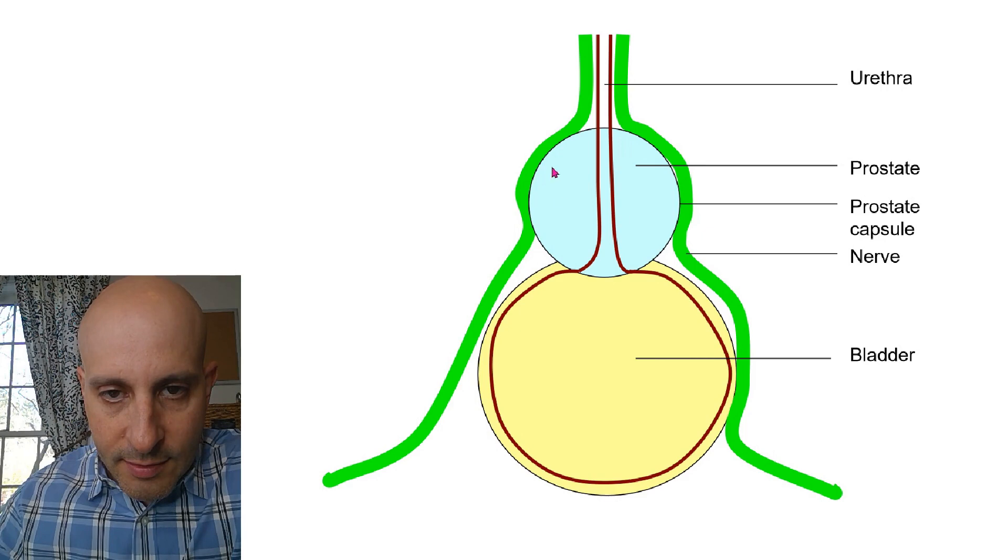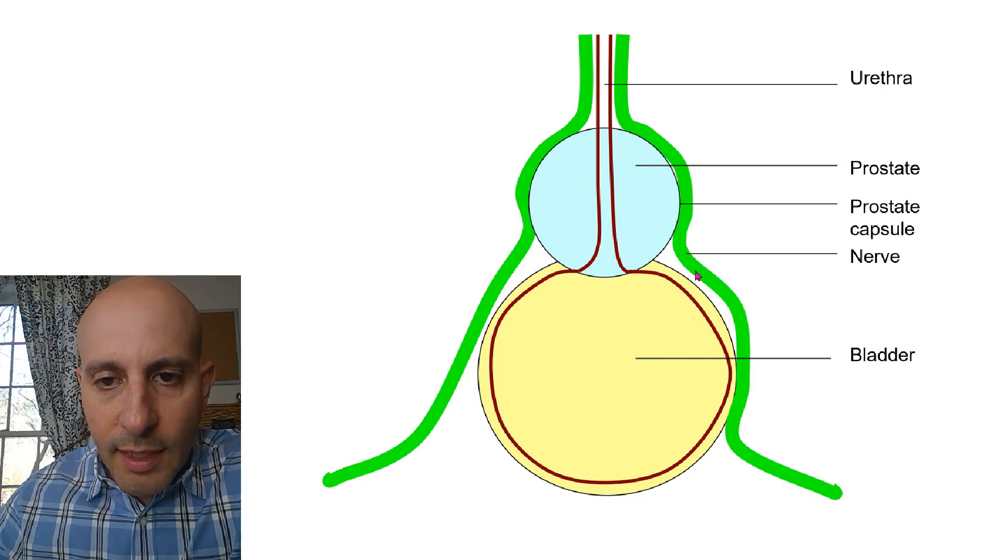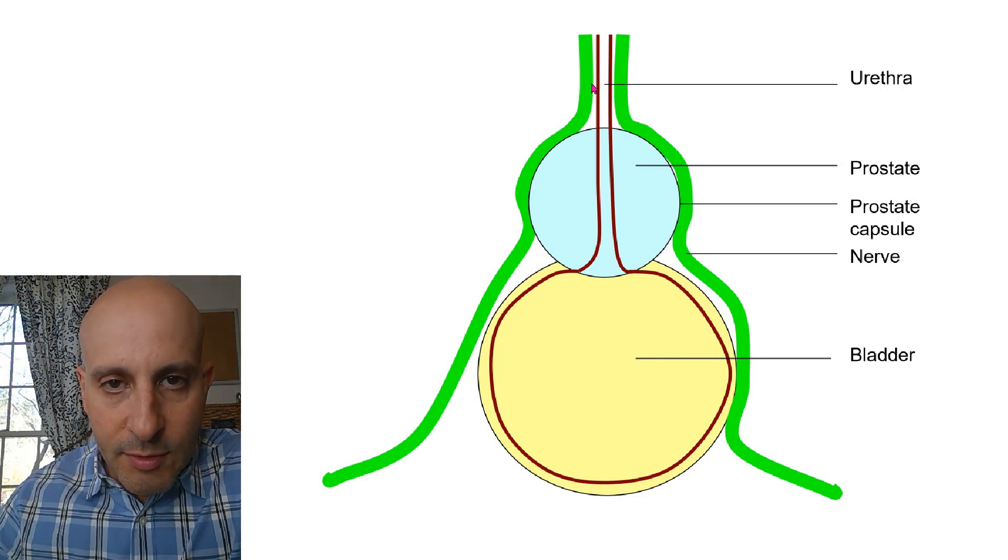This is the bladder, this is the prostate, this is the urethra. And in green, these are the neurovascular bundles, which are responsible for erectile function running along both sides of the prostate like curved railroad tracks.